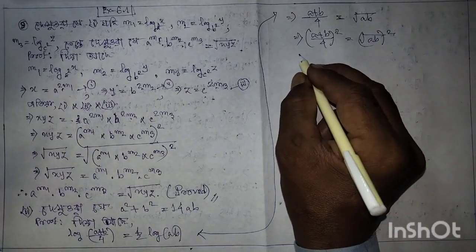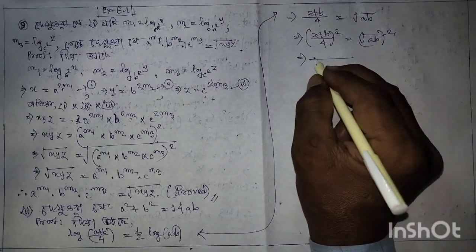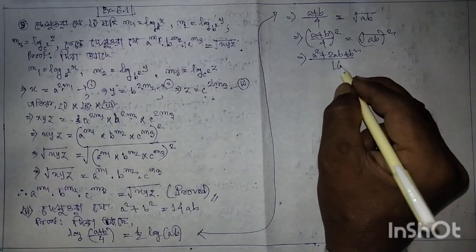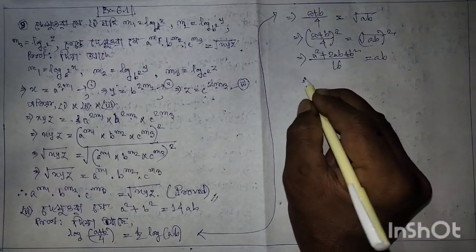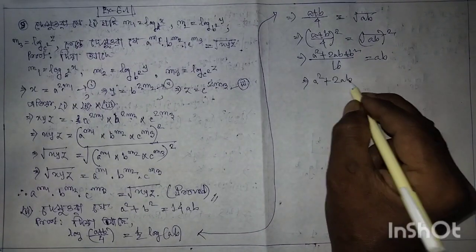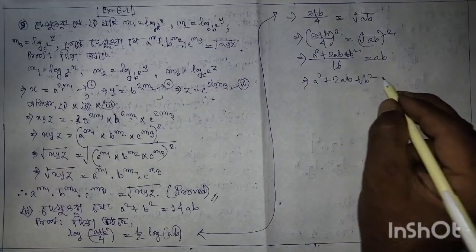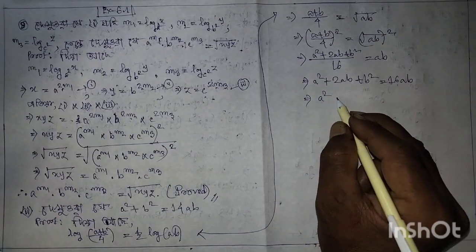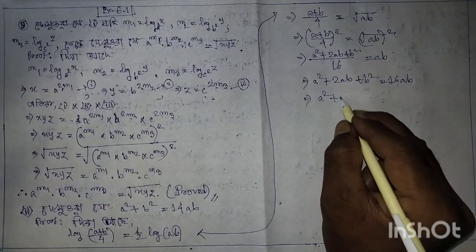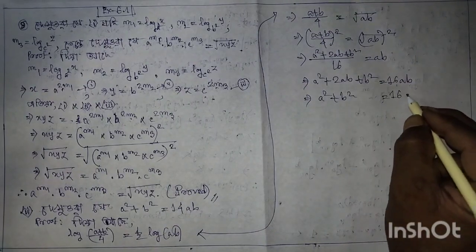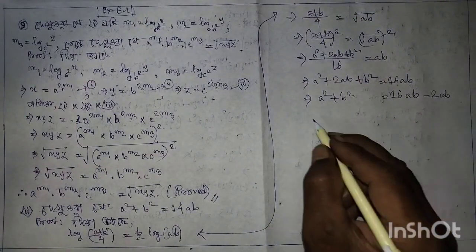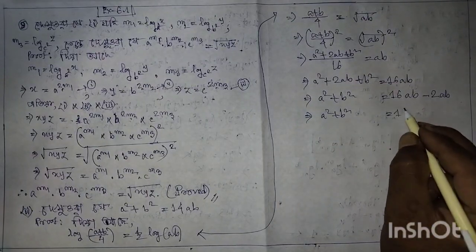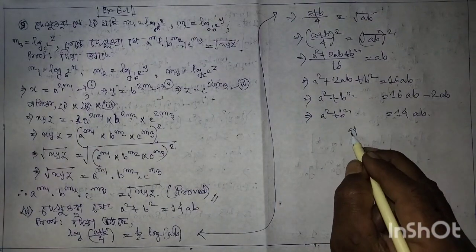And place (a plus b) squared divided by 16 equals ab. This implies a squared plus 2ab plus b squared equals 16ab. Therefore a squared plus b squared equals 16ab minus 2ab, which gives a squared plus b squared equals 14ab.